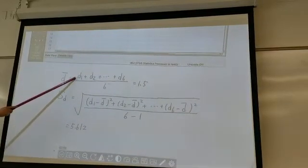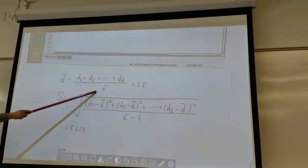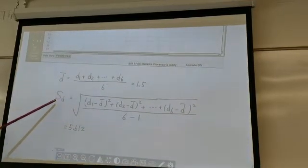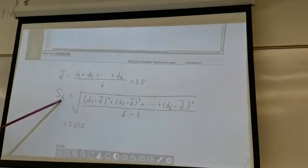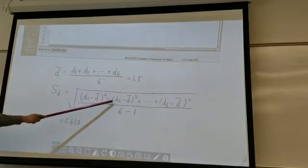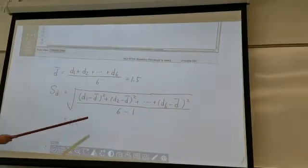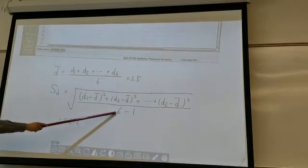The d-bar is d1 plus d2 up to d6 divided by 6, and this gives 1.5. And standard deviation of d is d1 minus d-bar squared, plus d2 minus d-bar squared, add it all the way up to d6 minus d-bar squared, and then divide it by 6 minus 1.